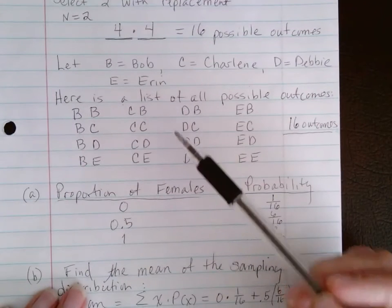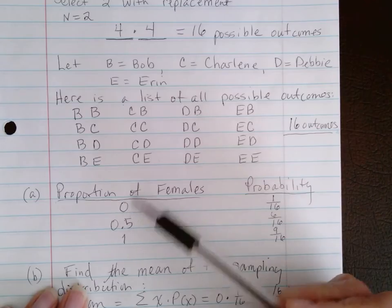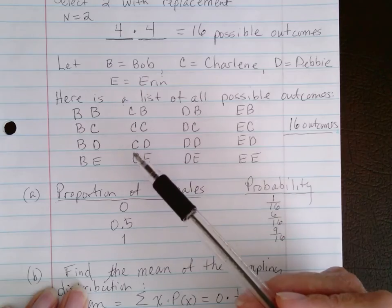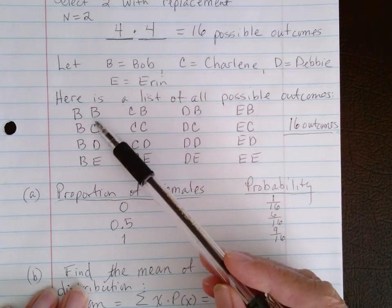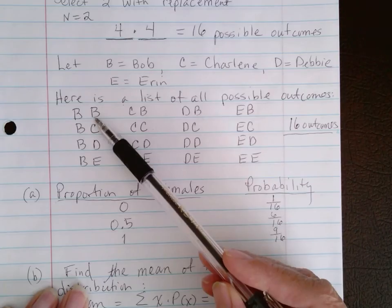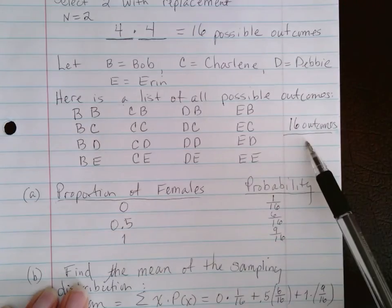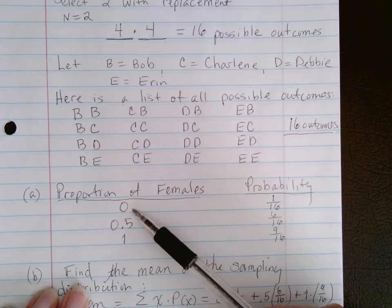Next, I want to count the proportion of females. Let's look at how many of these 16 outcomes had zero females. There was only one outcome that had zero females: when it was Bob both the first time and the second time. So out of the 16 outcomes, there's only one possibility out of 16 that we would have zero females.